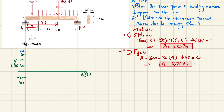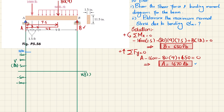Moving from point A to the point load location, there is no other force, so the shear force remains constant at 1670 pounds. At the point load, we subtract 1600: 1670 minus 1600 equals plus 70 pounds. So shear force drops from 1670 to 70 at that point. From there to the start of the distributed load, there is no other force, so shear force remains at 70 pounds.